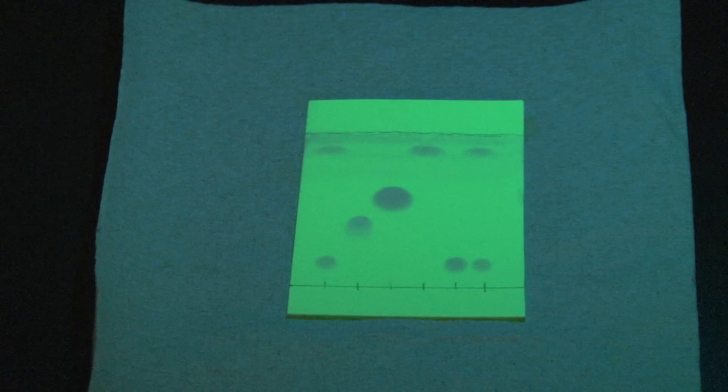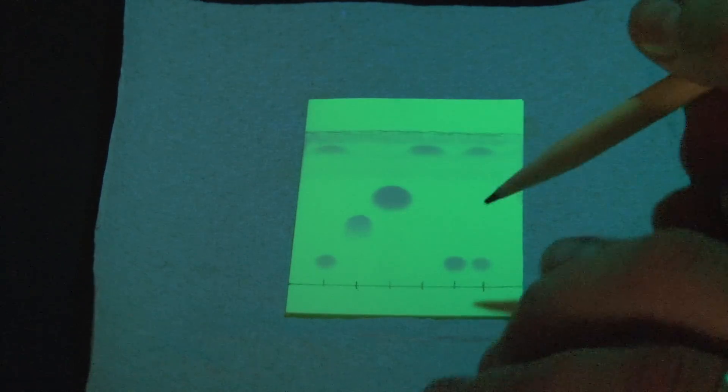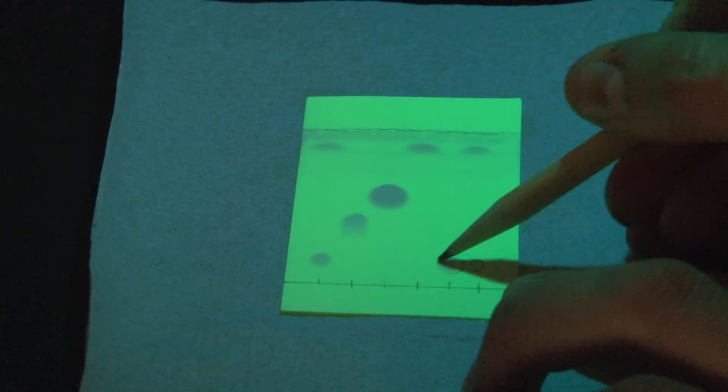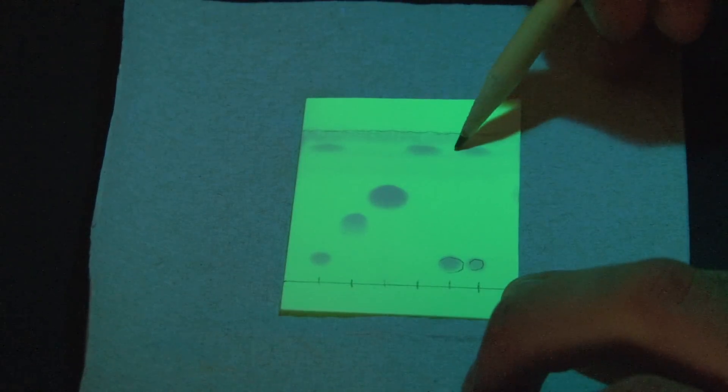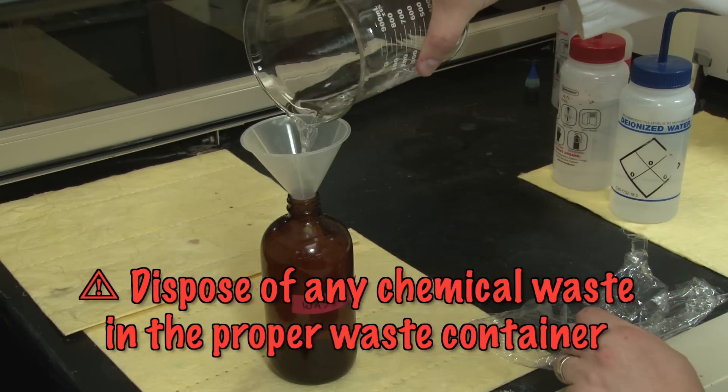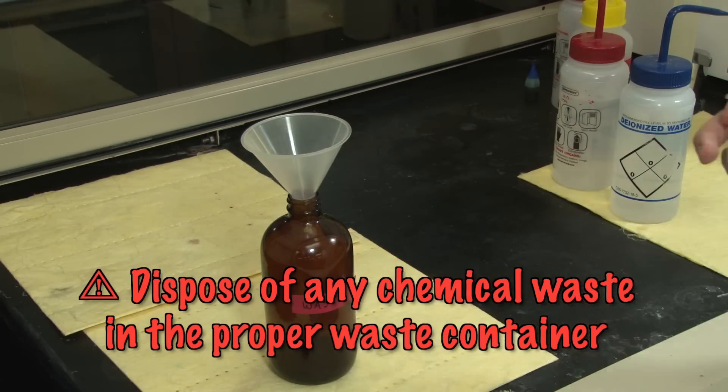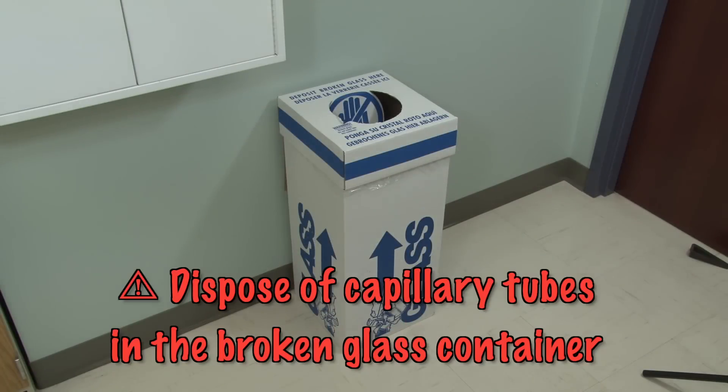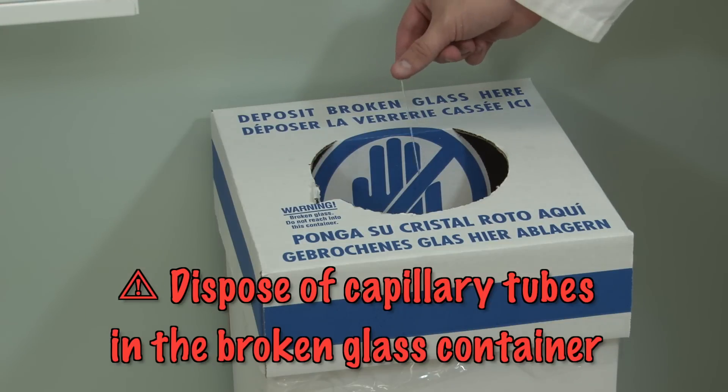Take your developed sheet and again view it under UV light. You should now be able to see how the spots migrated up the plate from their original positions. Circle them with a pencil and return to the lab. Once all the groups are finished with the known chemicals, you can dispose of all your chemicals into a waste container. Capillary tubes need to go into the designated broken glass container.